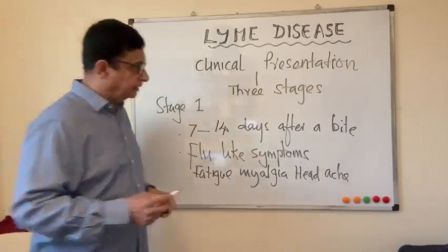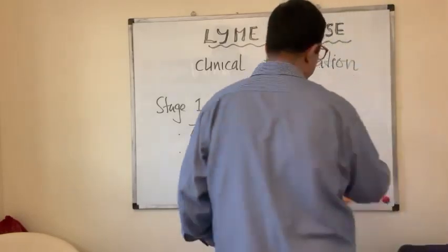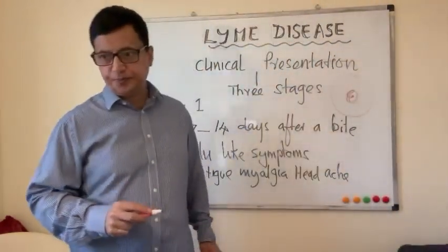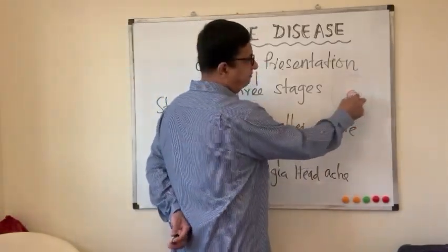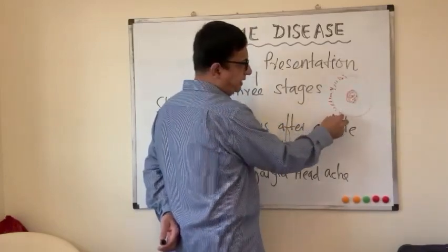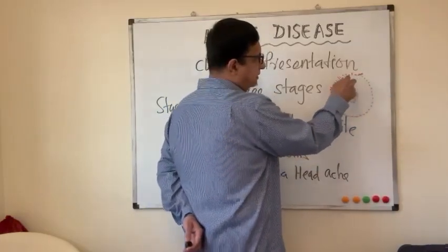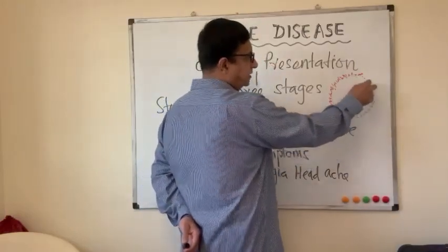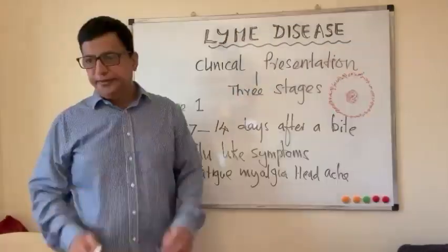A special feature is that most of these patients can have a special type of rash called the bull's eye rash. It is a non-pruritic rash — there is a central inflamed area and it spreads outward in the surrounding skin. It's not itchy — it is a non-pruritic rash — and this is called the bull's eye presentation.